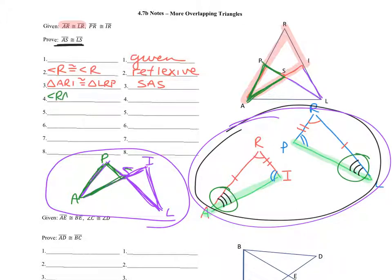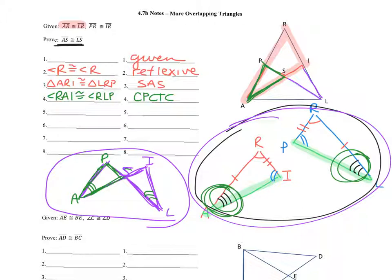We're going to say angle RAI is congruent to angle RLP because of CPCTC — because the two triangles were congruent, those angles were congruent. This angle and this angle are these angles. The lettering looks different because we used different triangles, but they are exactly the same angles. So in our two new triangles, we also have vertical angles. We're going to say angle PSA is congruent to angle ISL because they are vertical angles.